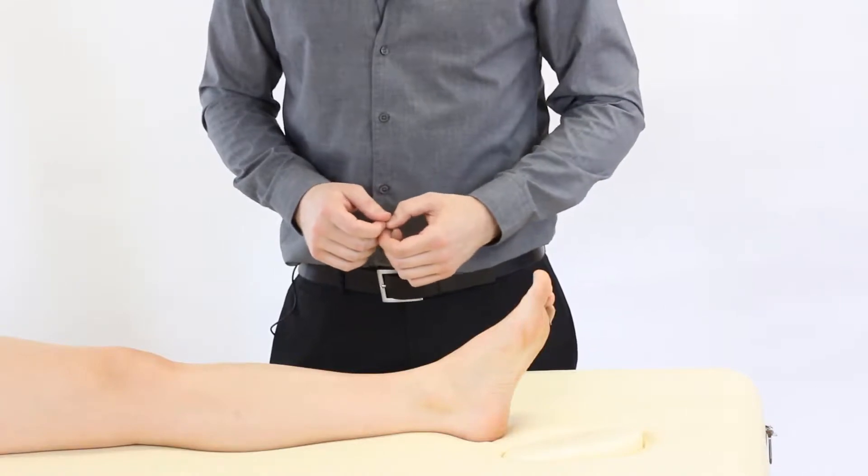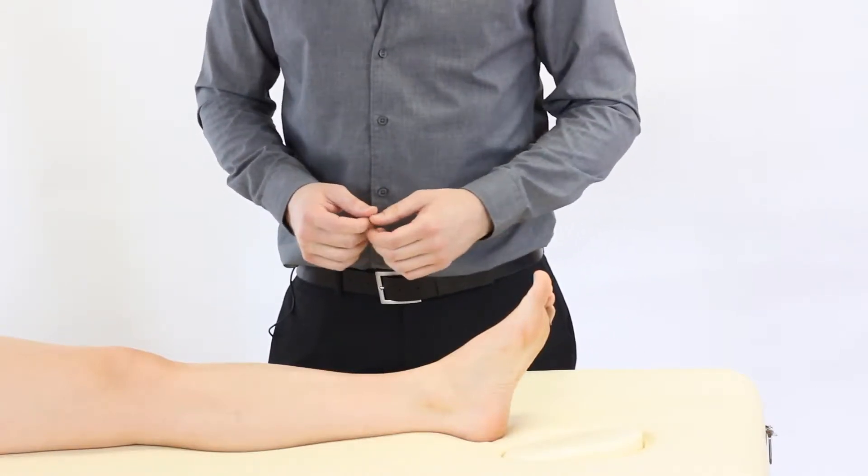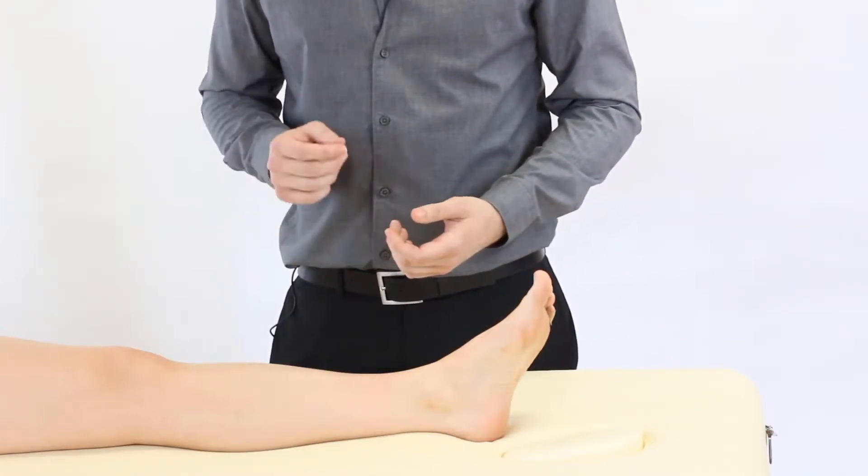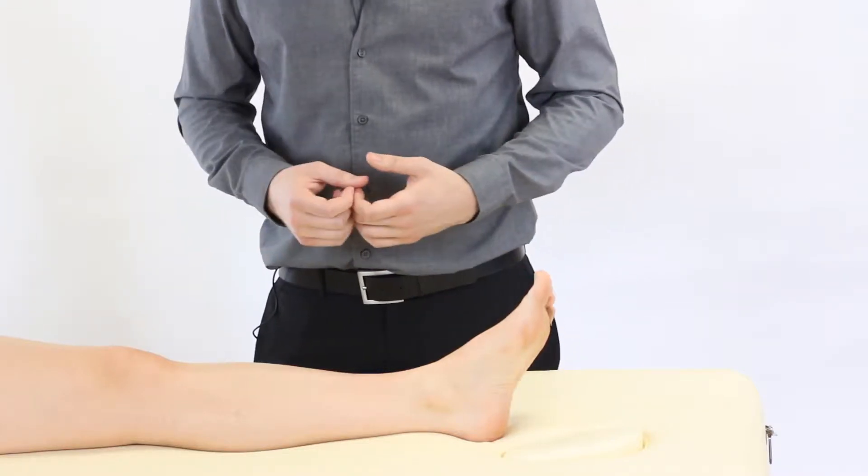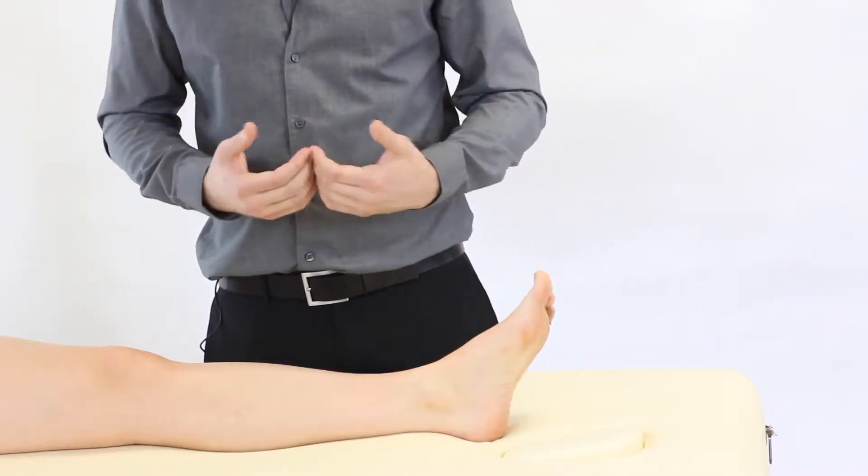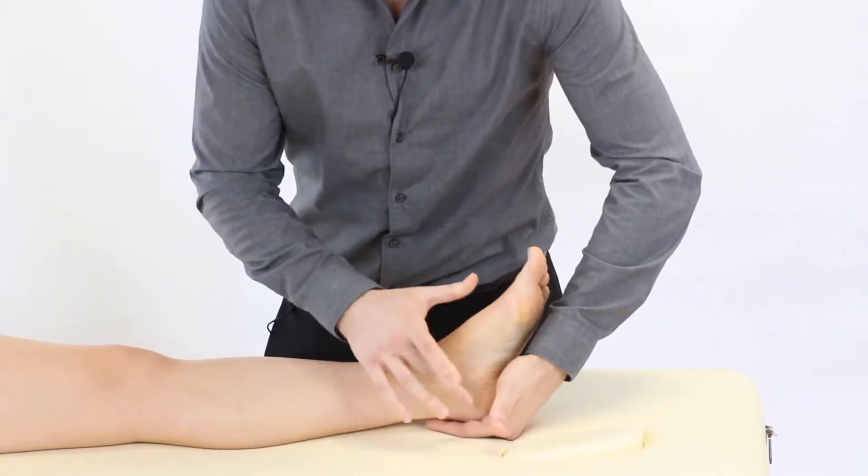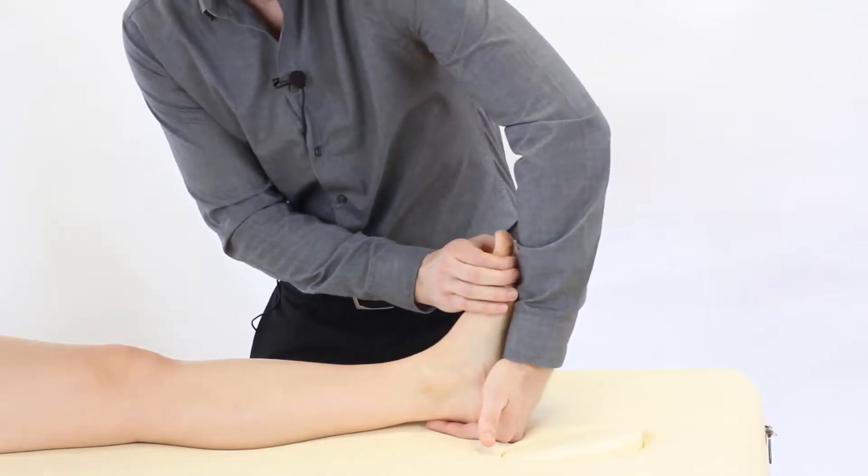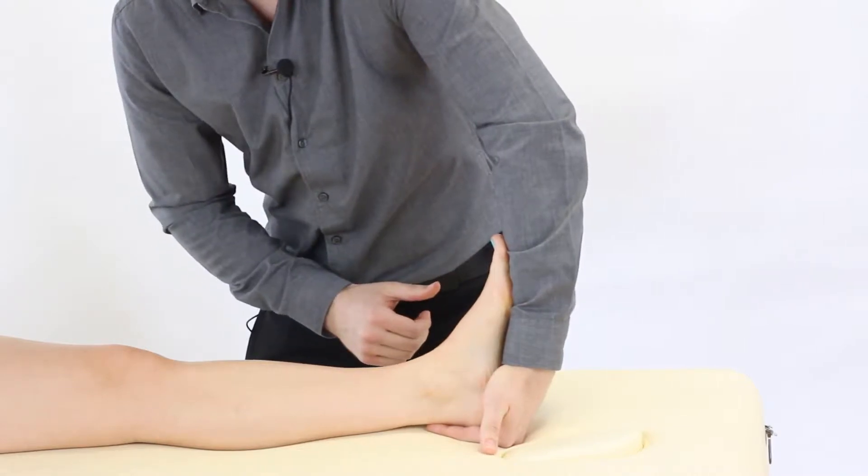Now we're going to look at passive range of motion of the ankle in dorsiflexion which occurs at the talocrural joint, the articulation between the talus and the tibia-fibular complex. As a therapist we're going to stand on the side of the testing leg and cup the heel bone, the calcaneus, like so. We're going to use our forearm to secure the plantar aspect of the foot.